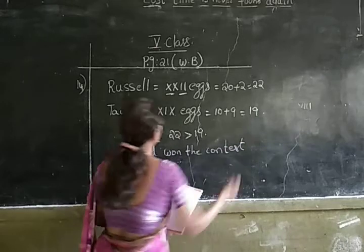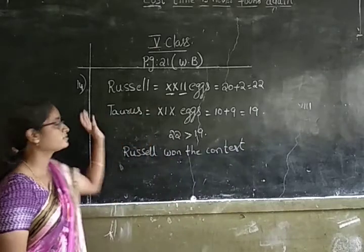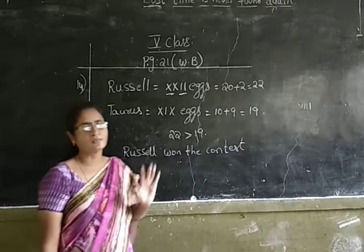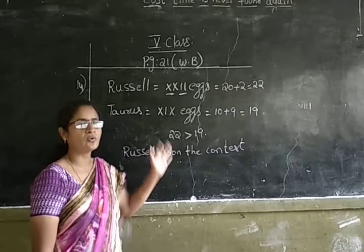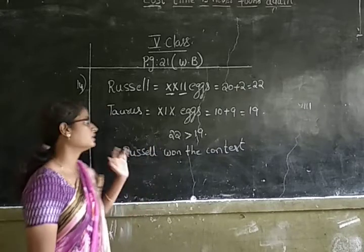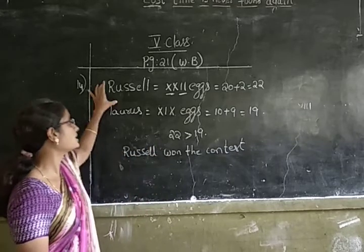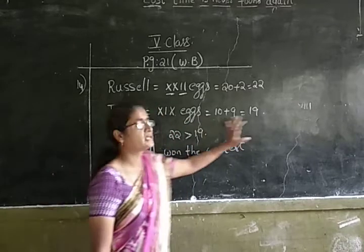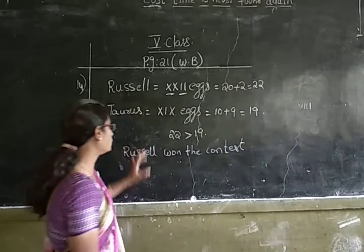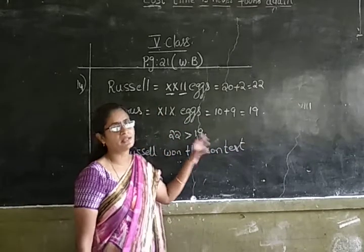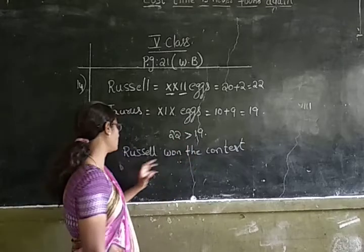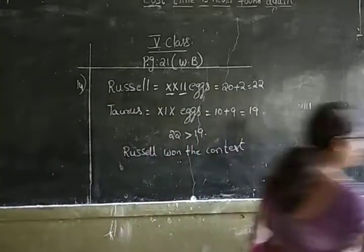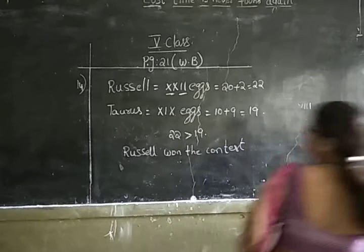Did you understand children? The king gave an amount to Russell and Taurus and asked them to bring some items. Those who get more items for the given amount will be the winner. Russell bought 22 and Taurus bought 19, so Russell won the contest. Now let us move to the 15th sum.